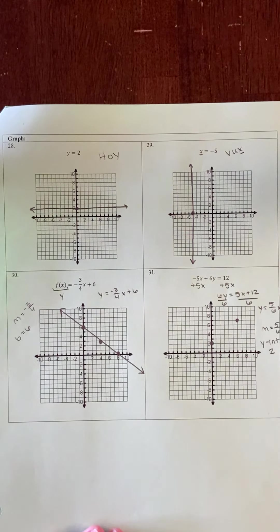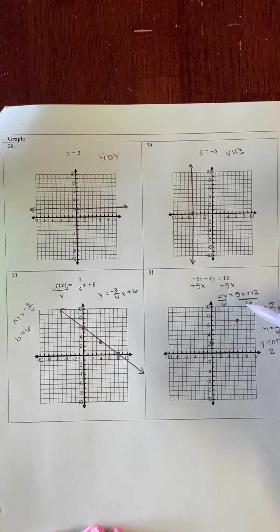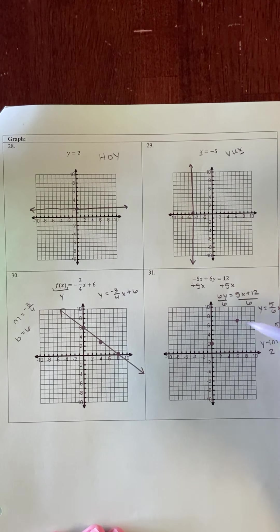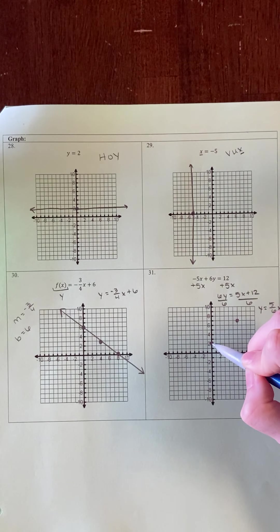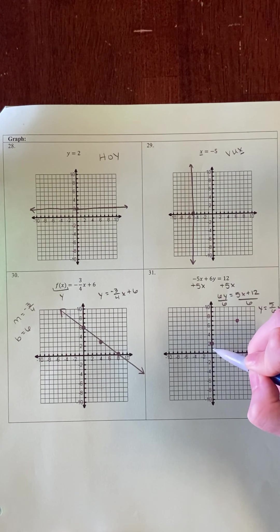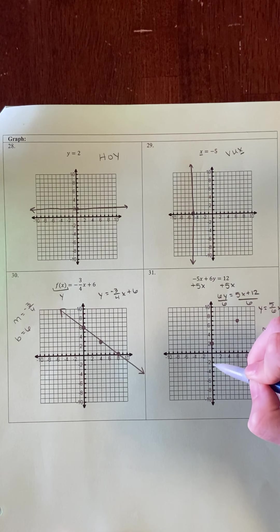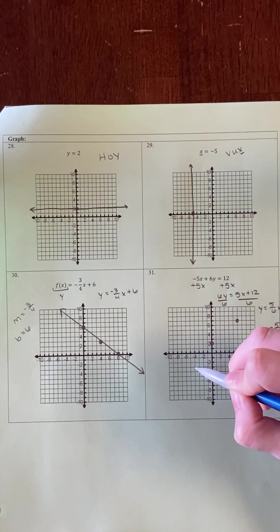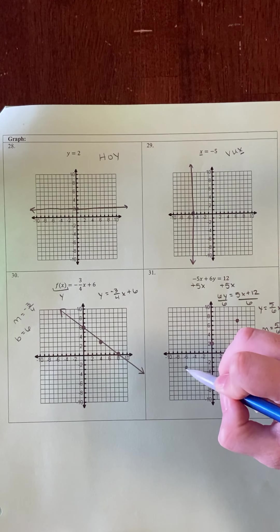Now, I like to plot 3 points. If you notice, if I try to go up 5 and over 6, I'll go off the graph. So I'm going back to my original y-intercept. Instead of going up and right, I'm going to go down and left. I'll go down 5 and left 6 and plot a point there.